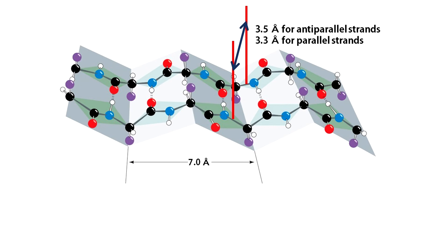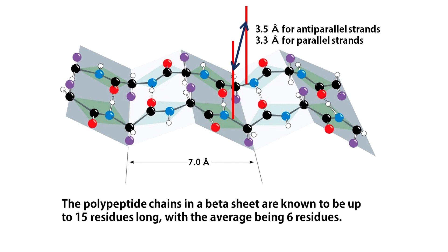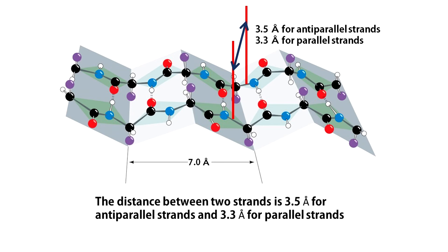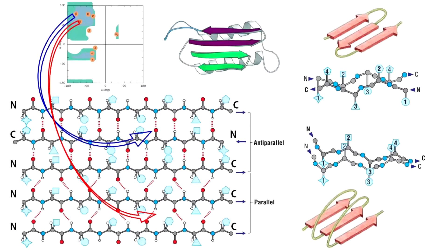Beta sheets are common structural motifs in proteins. The polypeptide chains in a beta sheet are known to be up to 15 residues long with the average being 6 residues. The distance between two strands is 3.5 angstrom for anti-parallel strands and 3.3 angstrom for parallel strands. Anti-parallel sheets are more stable because their inter-sheet main chain hydrogen bonds are more linear in nature.